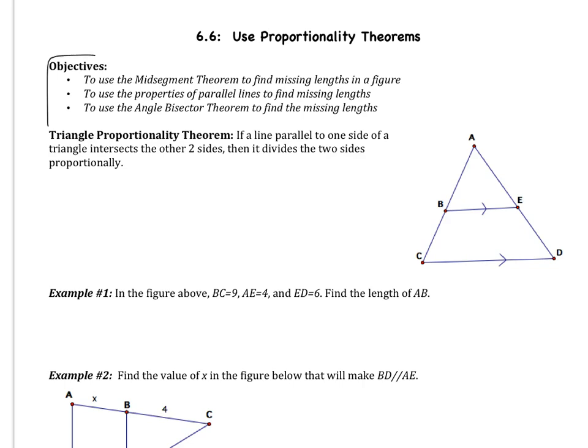Here are our objectives. We're going to use the mid-segment theorem to find missing lengths, we're going to use properties of parallel lines to find missing lengths, and then we're also going to use the angle bisector theorem.